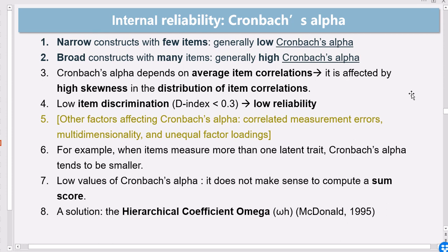So if you have a low Cronbach's alpha, it might be that you have a narrow construct, or that means you have just a few items in your construct. If you have a broad construct with many items, chances are higher for you to get a generally high Cronbach's alpha.